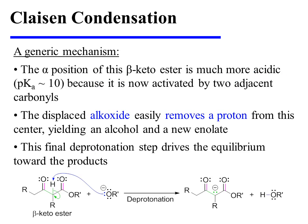The alpha position of this beta-ketoester is much more acidic because it is now activated by two adjacent carbonyls. As a result, its pKa is approximately 10. Therefore, the displaced alkoxide easily removes a proton from this center, yielding an alcohol as well as a new enolate.